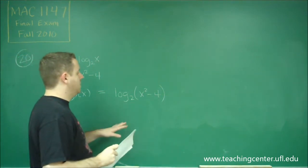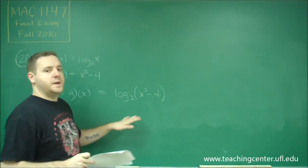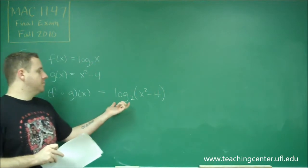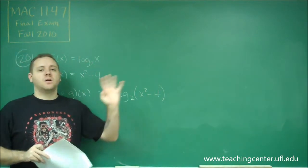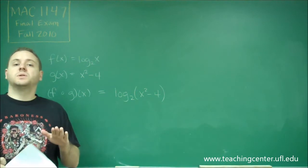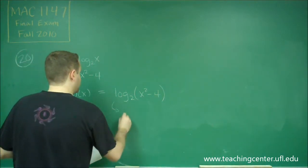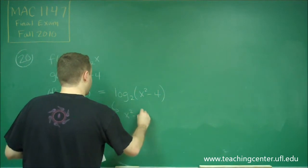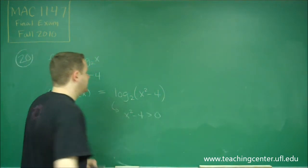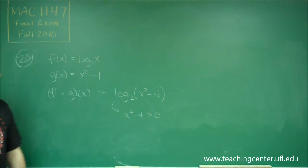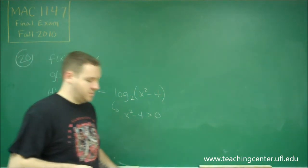So what we need to do here is think about what is our domain restriction. Well, we have a logarithm. So remember that when you do the log of any number, that number has to be strictly greater than 0. So this domain restriction becomes that x squared minus 4 has to be a positive number, because you can't take the log of 0 or any negative numbers.